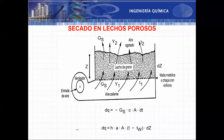En unitarias 1 vimos la superficie específica del lecho A, igual al área de la partícula sobre el volumen del lecho. La temperatura T es la temperatura del aire. Como el proceso de transferencia de calor es solo por convección, el sólido se encuentra a la temperatura de termómetro húmedo del aire. La fuerza impulsora es la diferencia entre la temperatura del aire y la temperatura de termómetro húmedo, multiplicado por el diferencial de altura dZ.